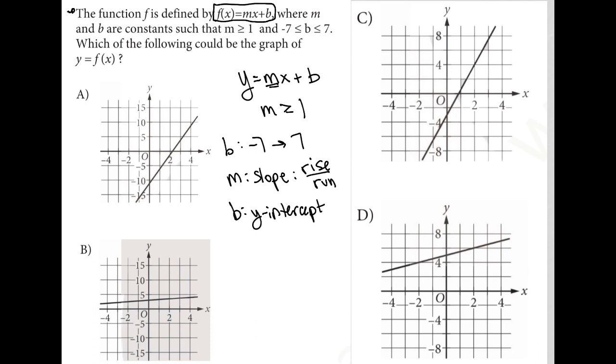So let's see. Choice A looks like the y-intercept is down here, lower than -10, which means choice A cannot be correct, right? Because the y-intercept can only be between -7 and 7. It can't be lower than -10.